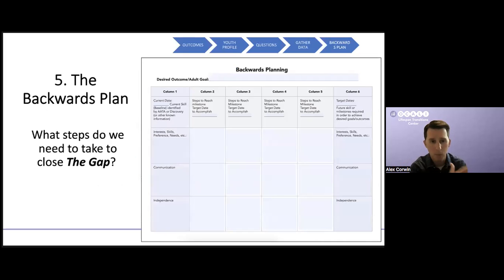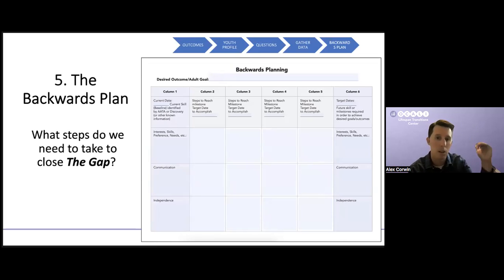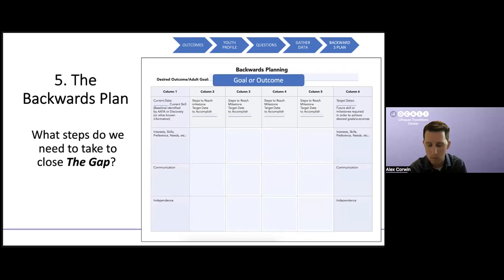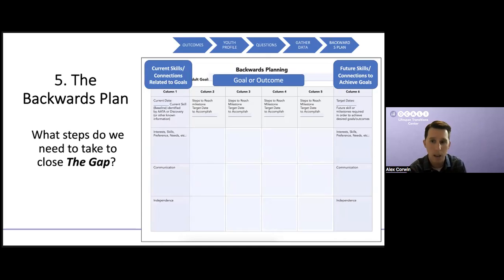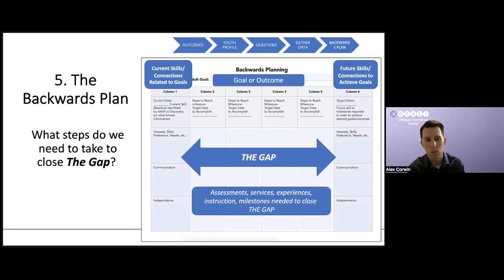We have a helpful tool for this backwards planning process. Column six on the right is that backwards plan — the ultimate goal we're trying to accomplish. Column one is our baseline or where we're at now. Columns two, three, four, and five represent the gap we're going to navigate — the steps we're going to take. At the top you put your goal or outcome, then future skills or connections needed to achieve it, where we're currently at, and then that navigation of the gap in the middle — including assessment, services, experiences, intentional instruction, and different milestones needed to close that gap and get the youth to achieving their goal.